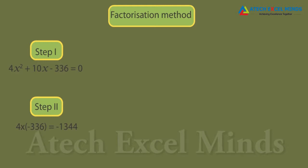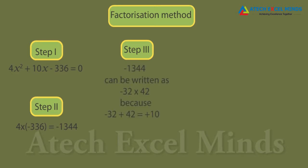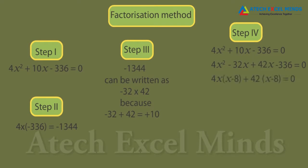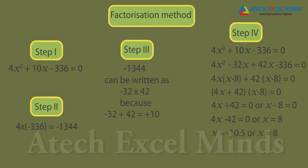Step 3: Find two factors of this product such that their sum equals the middle term. Here, −32 and 42 are two factors whose product is −1344 and sum is 10. Step 4: Use these factors −32 and 42 in the equation and take out the common factor. This implies either 4x + 42 = 0 or x − 8 = 0. Solving gives x = −10.5 or x = 8. Since age can't be negative, x = 8. Hence, Anmay's present age is 8 years and his mother's is 40 years.